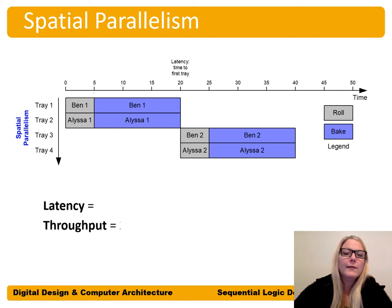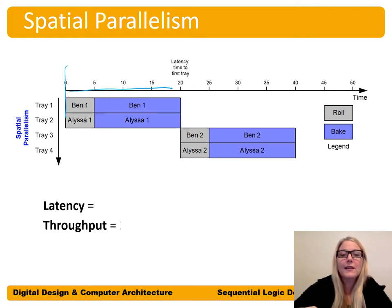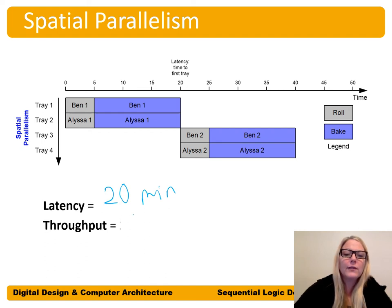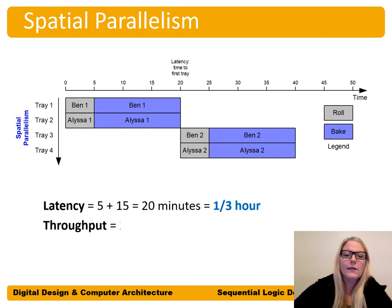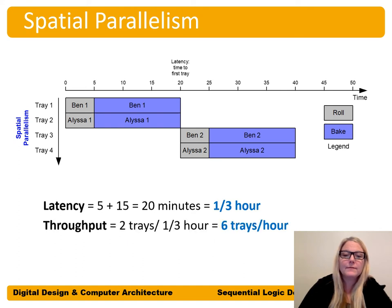With spatial parallelism: originally every 20 minutes one tray comes out, but now with both Ben and Alyssa baking, every 20 minutes we get two trays. Latency is still 20 minutes — five plus 15 — but throughput is now two trays every 20 minutes, or every third of an hour. That's six trays per hour, versus three trays per hour without parallelism. Using spatial parallelism, we've doubled the throughput as expected, but latency stayed the same.